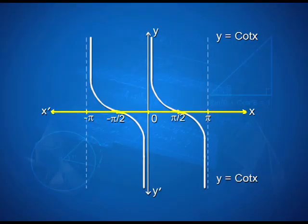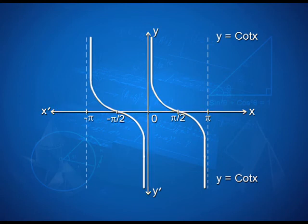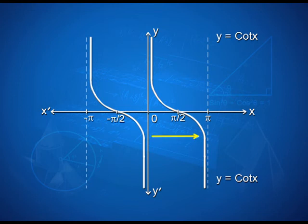Now let us see how the graph of y = cot x looks. With x'Ox as the x-axis and yOy' as the y-axis, we have intervals from 0 to −pi by 2 and −pi on the left-hand side, and pi by 2 and pi on the right-hand side.